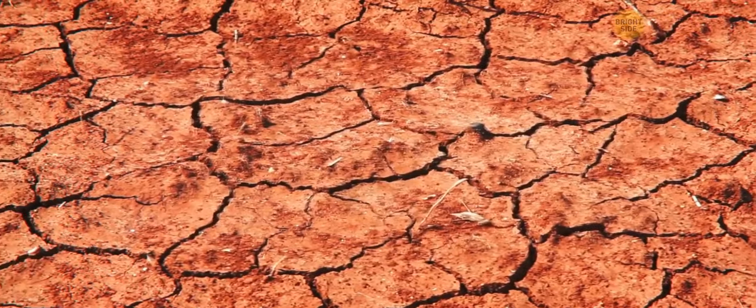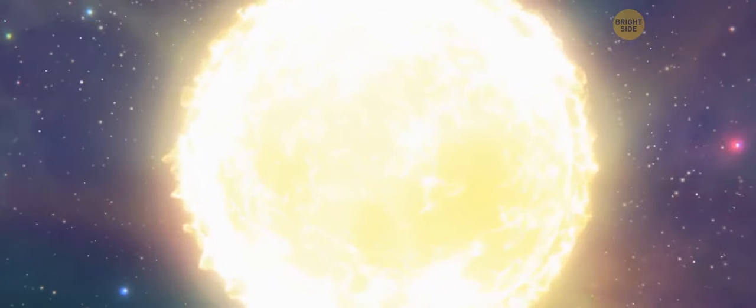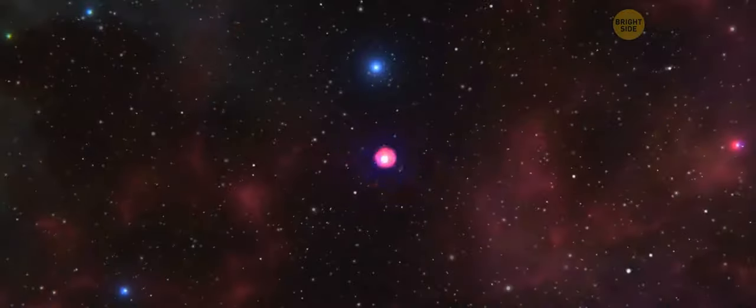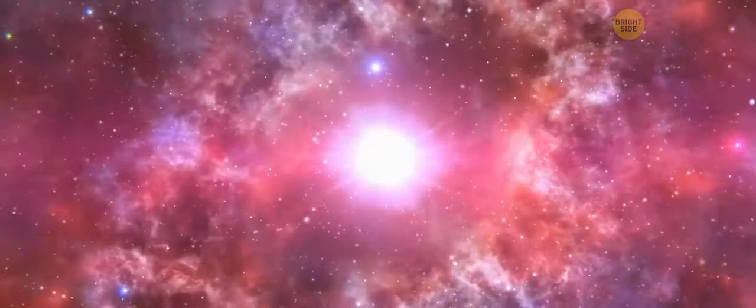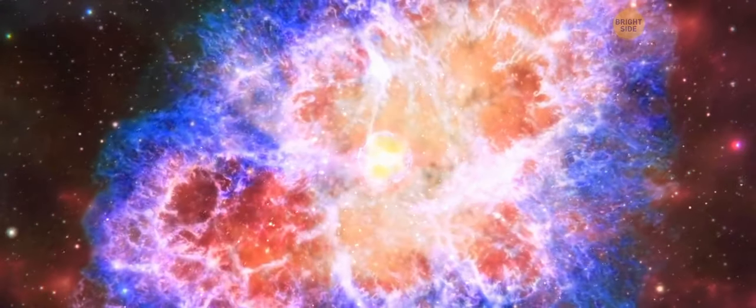Then we'll see more beautiful sunsets and sunrises. But the temperature will become too high. In theory, the Sun will get so big that it'll swallow the Earth. And then, it'll explode in a supernova, leaving nothing of our entire solar system behind.